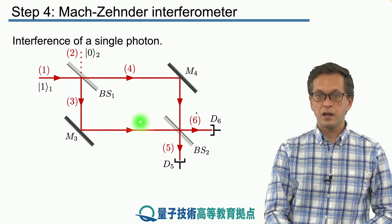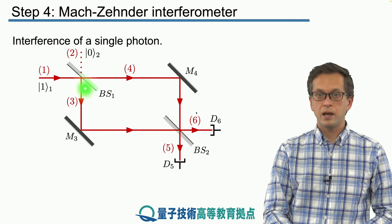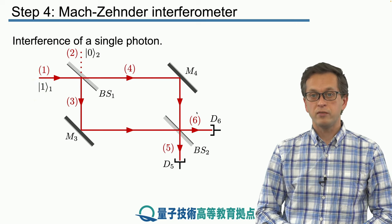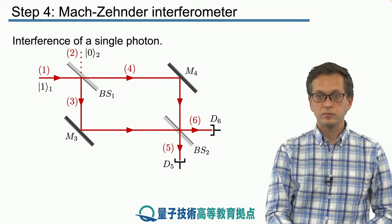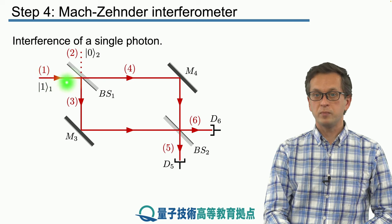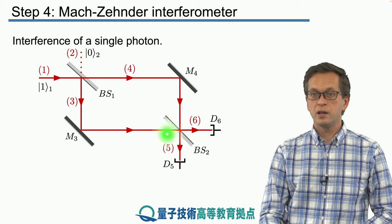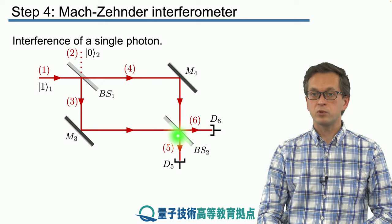We've got beam splitter 1 and beam splitter 2, and we've got a single photon in input 1 and vacuum in input 2. So the photon can follow two paths. One path is given by output mode 3. It gets reflected by mirror M3 and then travels towards beam splitter 2.